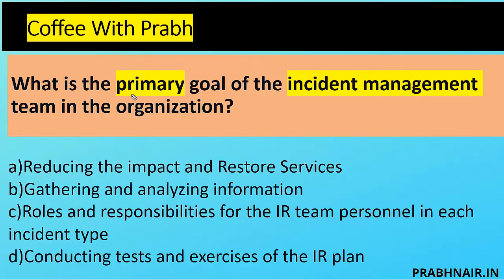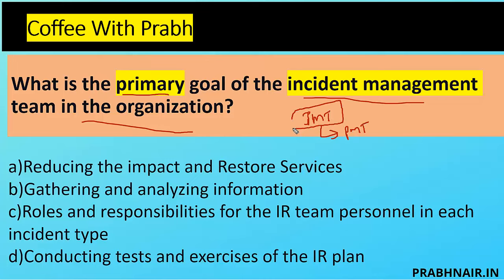Next question: what is the primary goal of the incident management team? We have two types of teams — the incident management team, whose goal is to restore the system, and the problem management team, whose goal is to track the root cause. Regarding the difference between incident and event: an incident is something that goes against the business objective, whereas an event is a series of activities used to achieve the business objective.